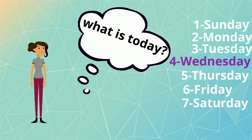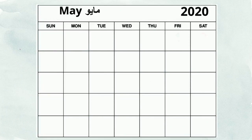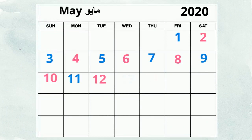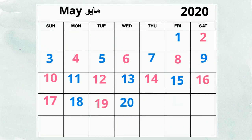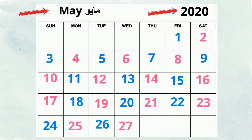Today is Wednesday. Do you know, kids, which month and year we are in now? Very good. We are in May 2020.